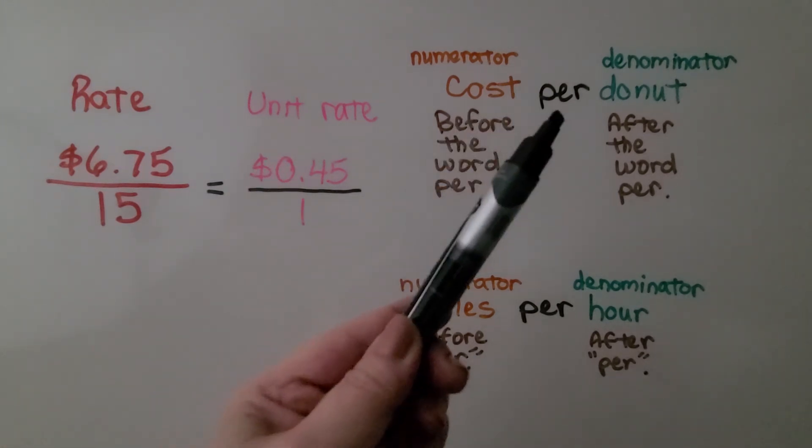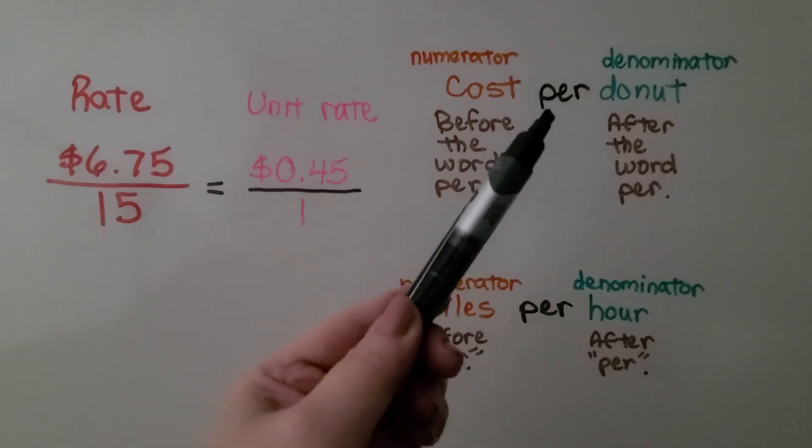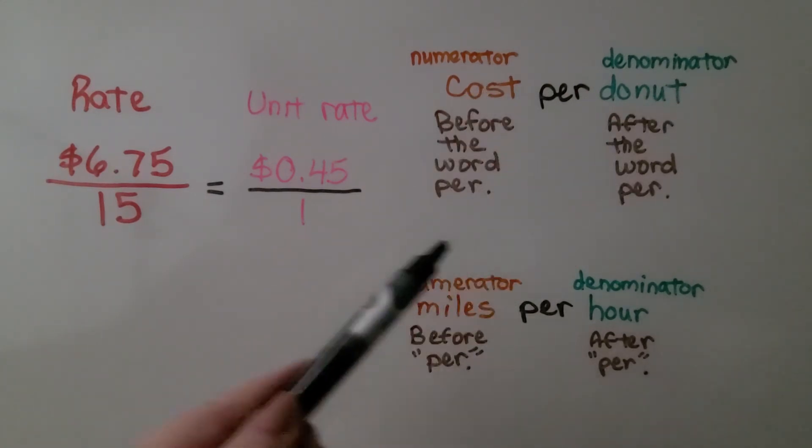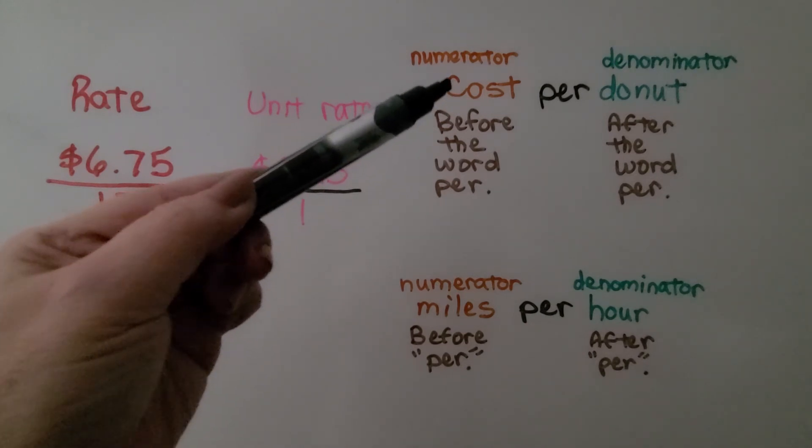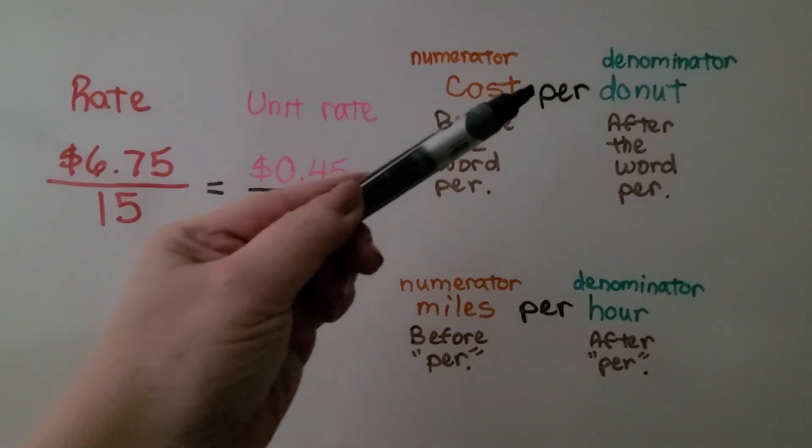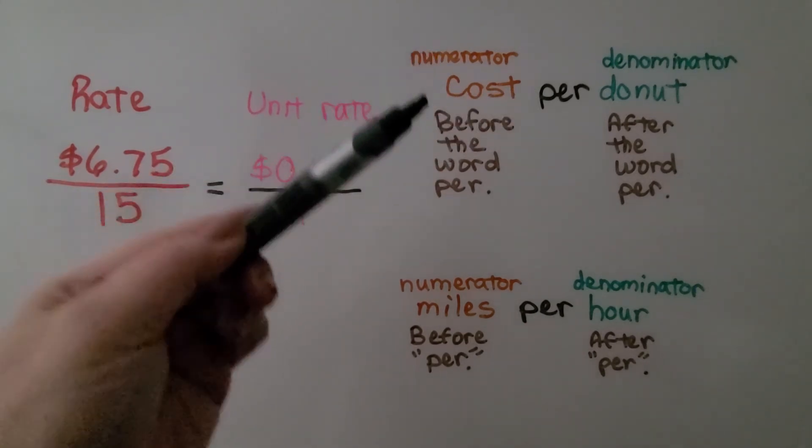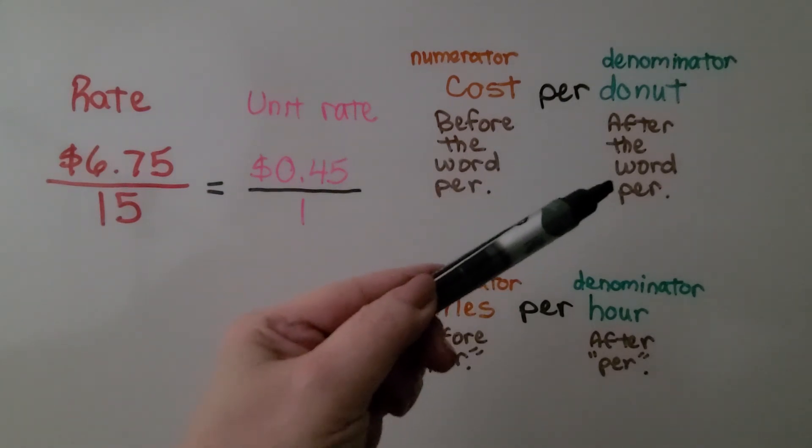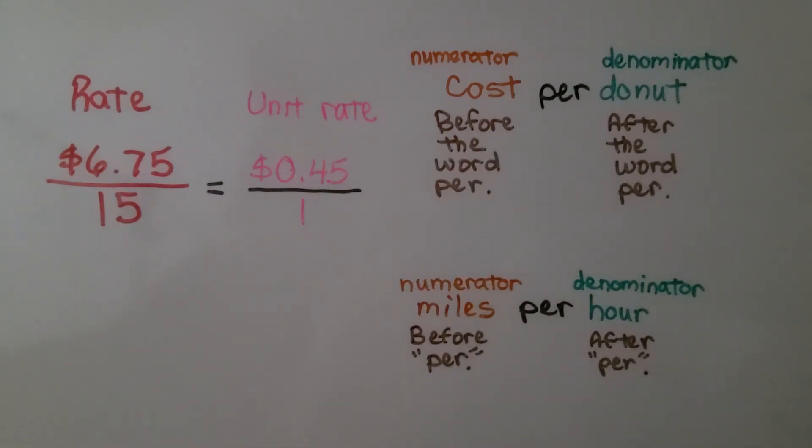So if you see cost per donut, remember, per means each. It means one. So cost for one donut. This cost that comes before the word per, that's our numerator. And donut comes after the word per, that's going to be our denominator.